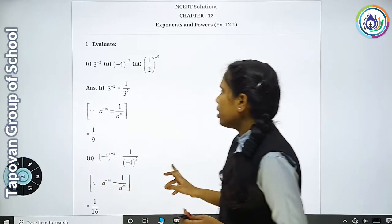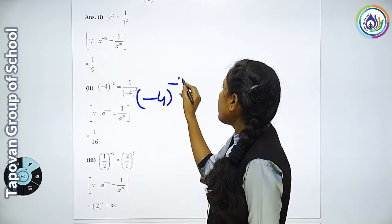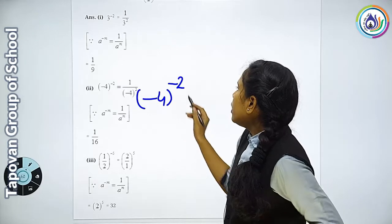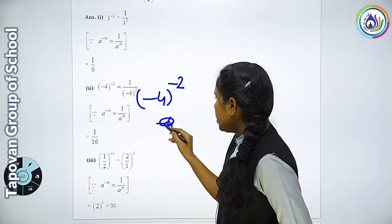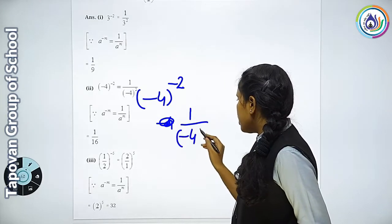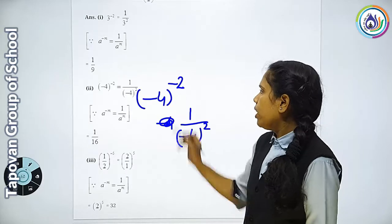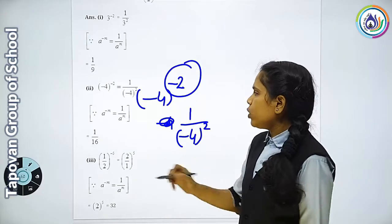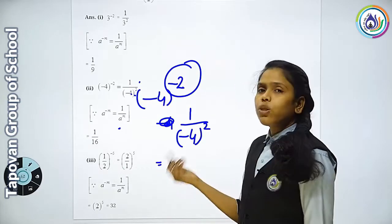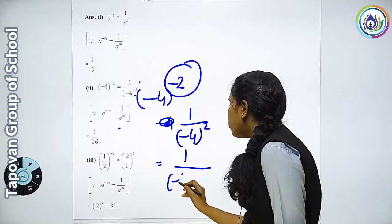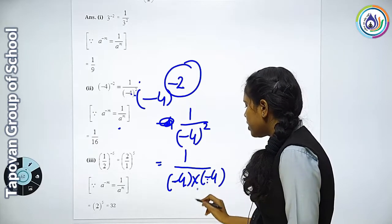Second number. Ab yahan power kya hai? Minus 4. Isi upar bhi power raised to minus 2. To yahan minus 4 hai already. Iski power kahan hai? Minus mein hai. To isse neeche jayoge — minus 4 ka square. Ye ho gaya plus — power plus ho jayegi, par number plus nahi hoga. Aapko sirf power ko hi plus kar sakti ho. Divide mein jayoge. Ab minus 4 into minus 4 — minus into minus plus — 4 fours are 16. Yaani 1 upon 16.